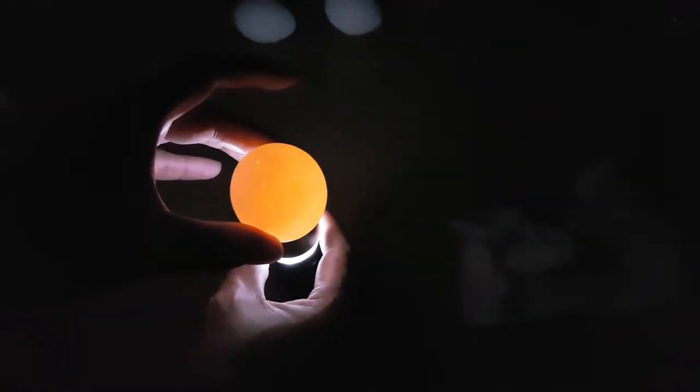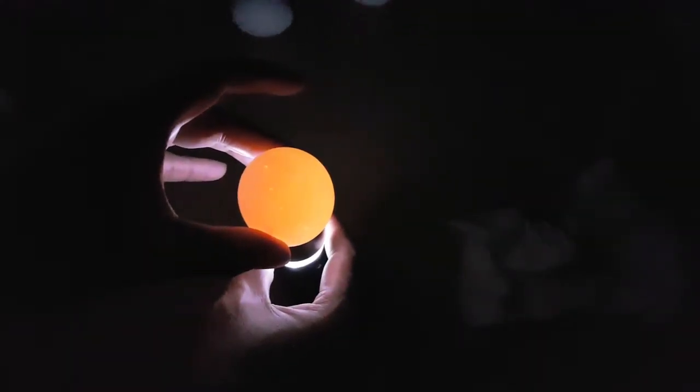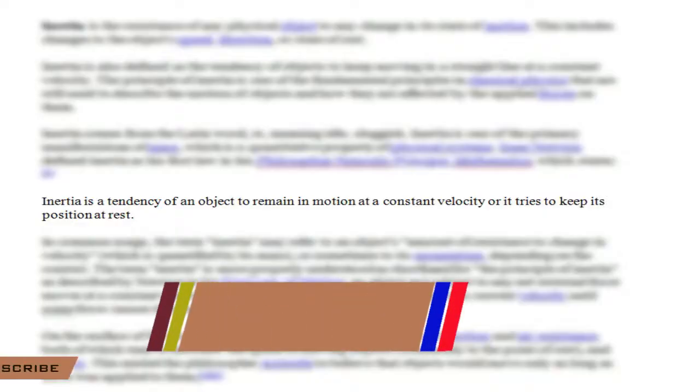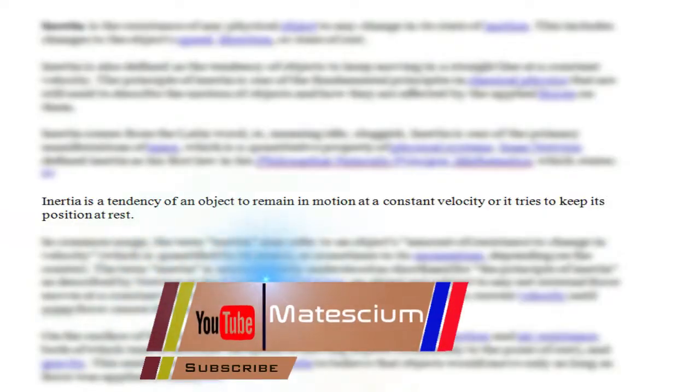A torchlight can be used to detect the boiled egg and raw egg. The boiled egg looks darker under torchlight because light cannot pass through the solid boiled egg. But the raw egg looks brighter because light can pass through the liquid inside. Now let's come to the main point — moment of inertia.